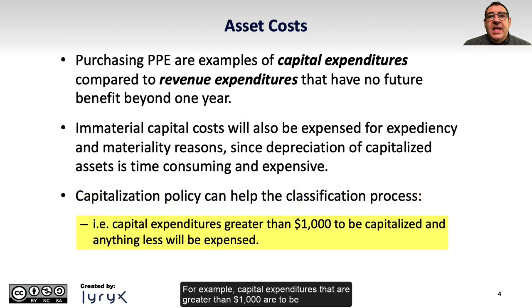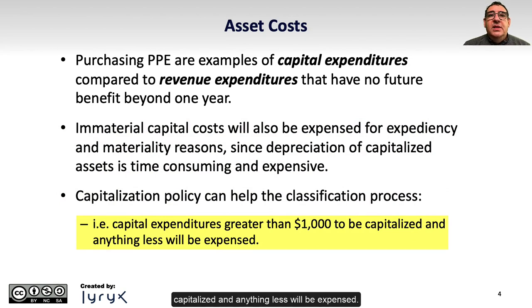A firm's capitalization policy can help the classification process. For example, capital expenditures that are greater than $1,000 are to be capitalized, and anything less will be expensed.